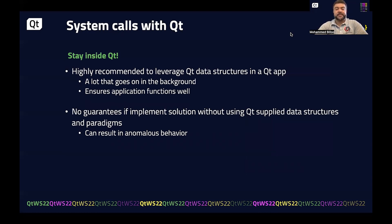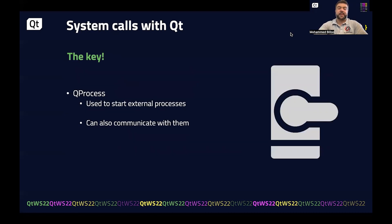So how do we get around this? We have to stay inside Qt and find the appropriate data structure that allows us to make system calls within the framework. The key to doing so is the class QProcess. It's straightforward — it's used to start external processes. We can communicate with these processes, send input as if through standard in, and receive output from standard out or standard error. We can use this class to implement system calls within the Qt framework.